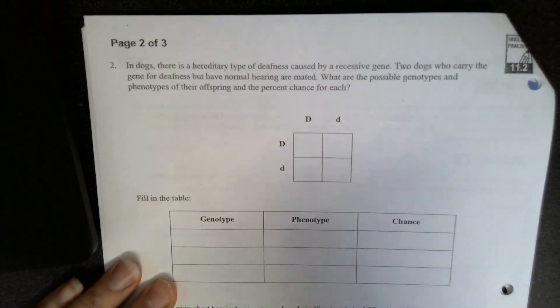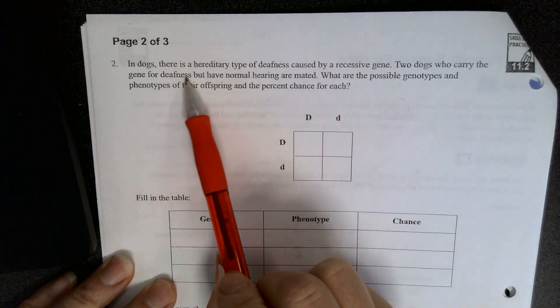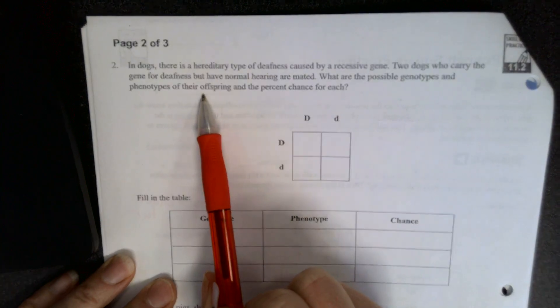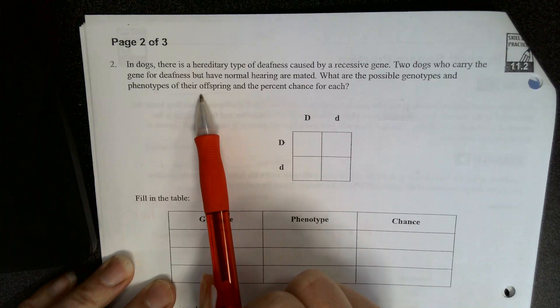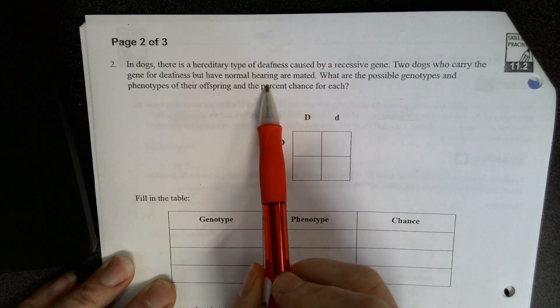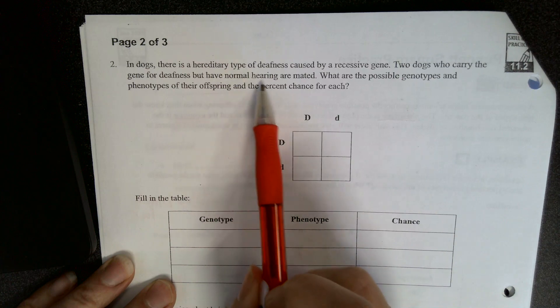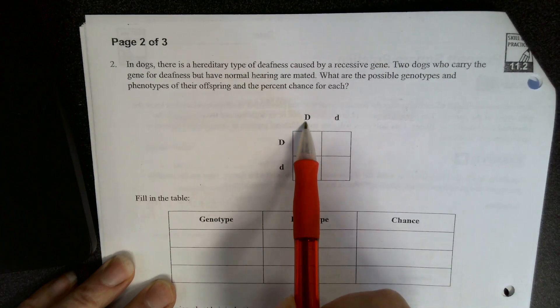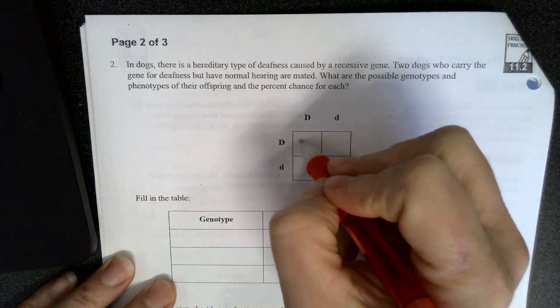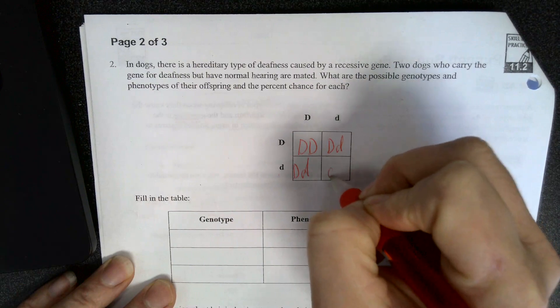In dogs, there is a hereditary type of deafness caused by a recessive gene. Two dogs who carry the gene for deafness but have normal hearing mate. What are the possible genotypes? So this is an example where in the problem, they don't give you the genotype outright. You kind of have to figure it out. But it says here that two dogs carry it but are normal. So that means that they have to be this genotype. So they have the normal gene and then they are carriers of the deafness gene. So if we're going to do this Punnett square,